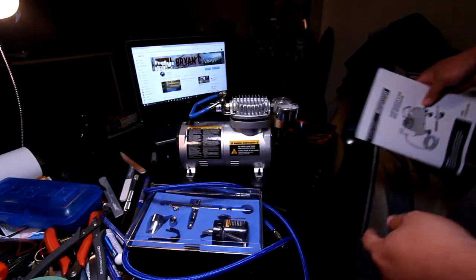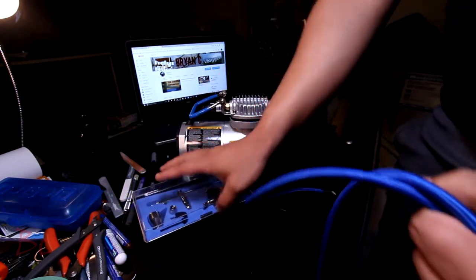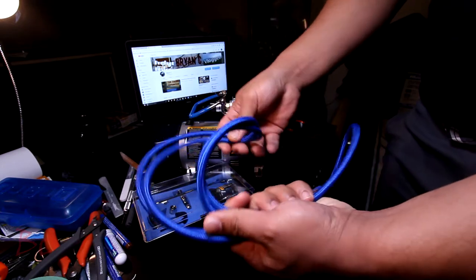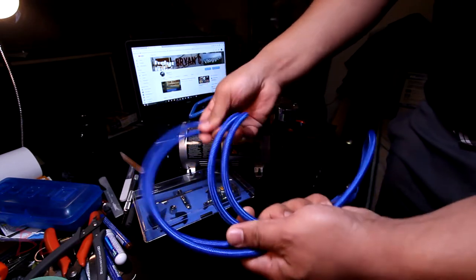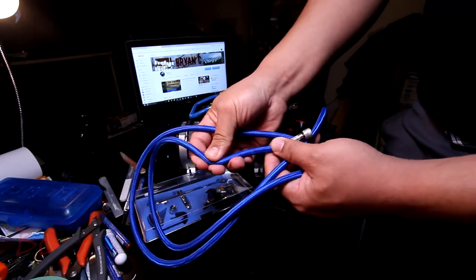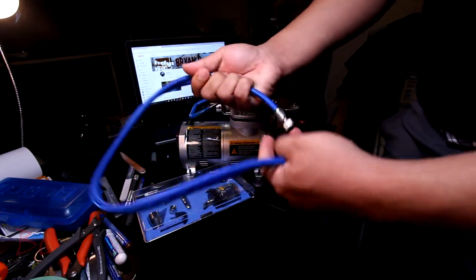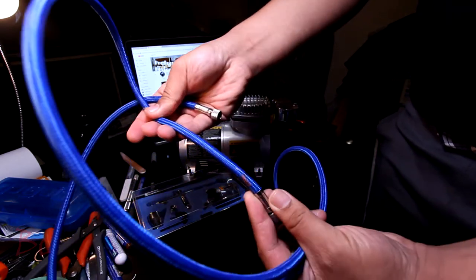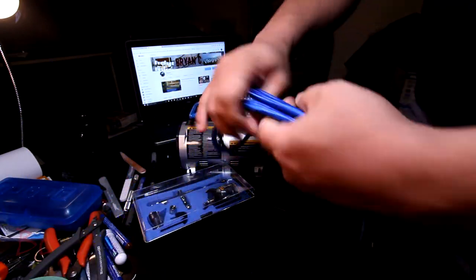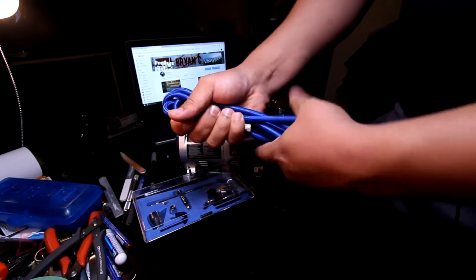This is the cable or the hose for the kit here, it's blue, not bad. Rubbery material, kind of solid. Like I said, it's already been used so you guys will notice the paint mark there, not bad at all.